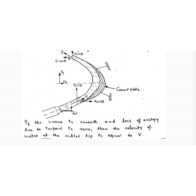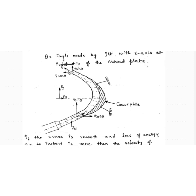Water enters the curved plate with velocity v making angle theta. We resolve this velocity into two components: v·cosθ in the direction of the jet, and v·sinθ perpendicular to the direction of the jet. Similarly, water leaves with velocity v making angle theta with the horizontal, also resolved into v·cosθ and v·sinθ. Since the plate is symmetrical, both inlet and outlet angles are theta.